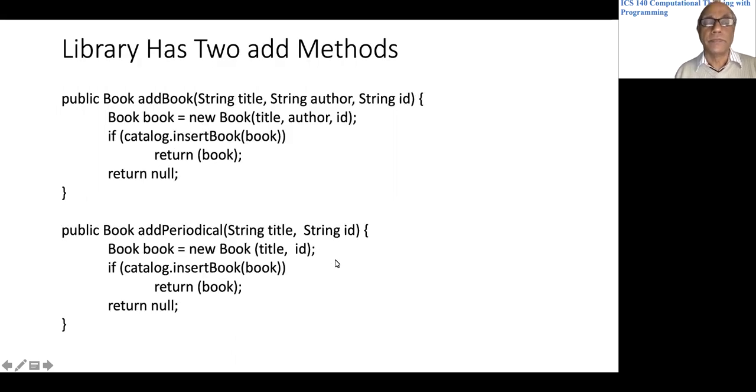addBook and addPeriodical are both in Library. They both create a Book object. This invokes a constructor with three parameters, this invokes the constructor with two parameters, and both insert the book in the catalog object.